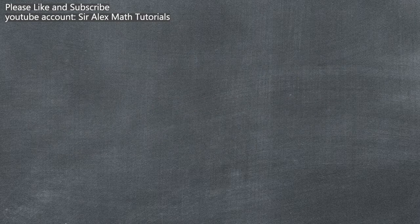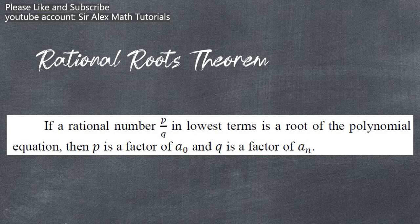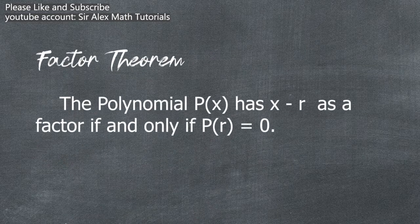The rational roots theorem states that if a rational number p over q in lowest terms is a root of a polynomial equation, then p is a factor of a sub zero and q is a factor of a sub n. The factor theorem states that the polynomial p of x has x minus r as a factor if and only if p of r is equal to zero.